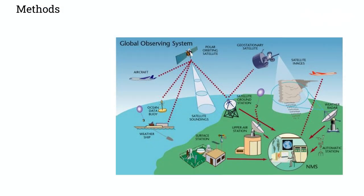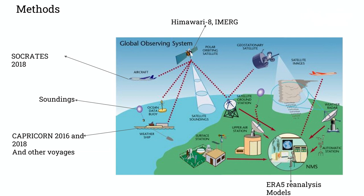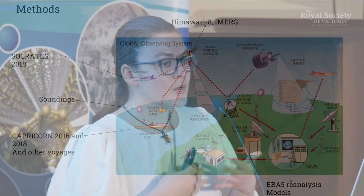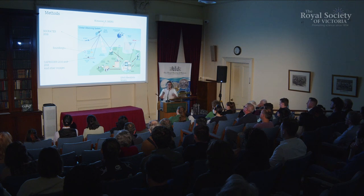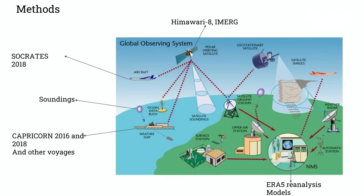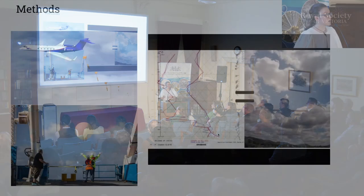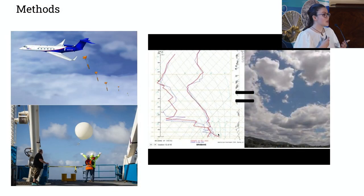For this, I used a rich set of datasets. I took field campaigns — both aircraft-based and ship-based. I also used satellite information: Himawari-8 to represent clouds, and the IMERG product for precipitation processes. I also used reanalysis data — models that use all those equations and incorporate measurements to some extent — as well as purely equation-based models.